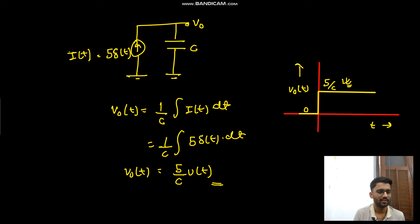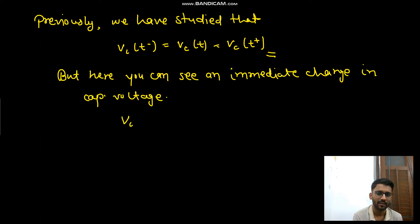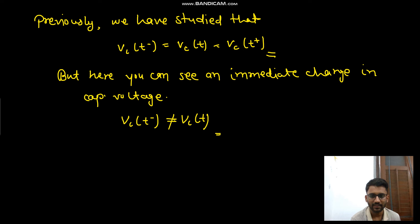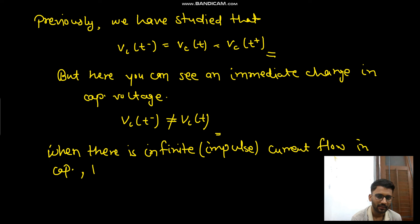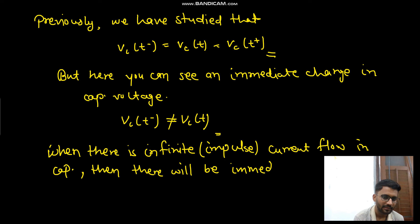Previously we studied that a capacitor doesn't change its voltage immediately — that is, v_C(t⁻) = v_C(t) = v_C(t⁺). But here you can see an immediate change in capacitor voltage: it was first 0, and immediately came to 5/C. At t=0⁺ you'd expect the voltage to be 0, but there is an immediate change. So v_C(t⁻) ≠ v_C(t). This happens because there is infinite (impulse) current — when impulse current flows in a capacitor, there will be an immediate change in capacitor voltage.